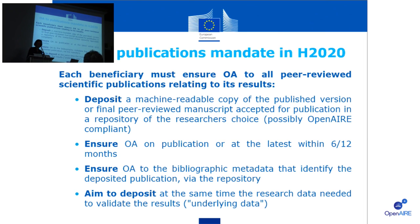In this mandate, each beneficiary must ensure open access to all peer-reviewed scientific publications relating to its results. The beneficiary must deposit a machine-readable copy of the published version or the final peer-reviewed manuscript accepted for publication in a repository of the researcher's choice, possibly open-access compliant. Secondly, the beneficiary must ensure open access to the publication at the latest within six or twelve months — this is called an embargo period. The beneficiary also has to ensure open access to the peer-reviewed metadata that identifies the deposited publication via the repository.